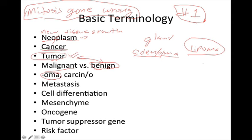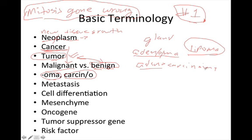Cancer is a word used to describe malignant neoplasms or malignant tumors. When you see the term 'carcino-' in a term, that means the neoplasm is cancerous. For example, an adenocarcinoma combines 'adeno' (gland), '-oma' (tumor), and 'carcino-' (cancerous) — meaning a cancerous glandular tumor. So 'adenocarcinoma' indicates a malignant tumor of glandular origin.